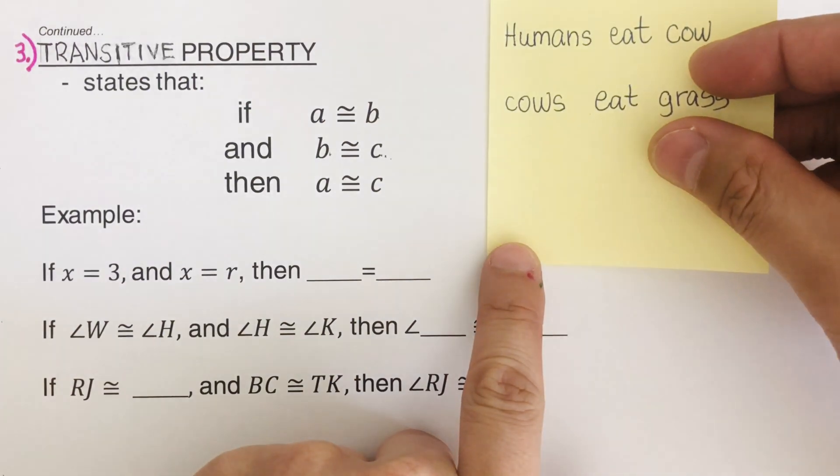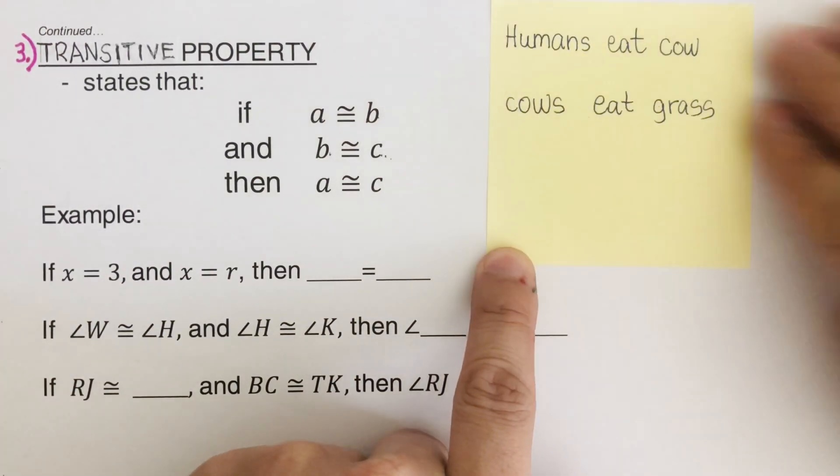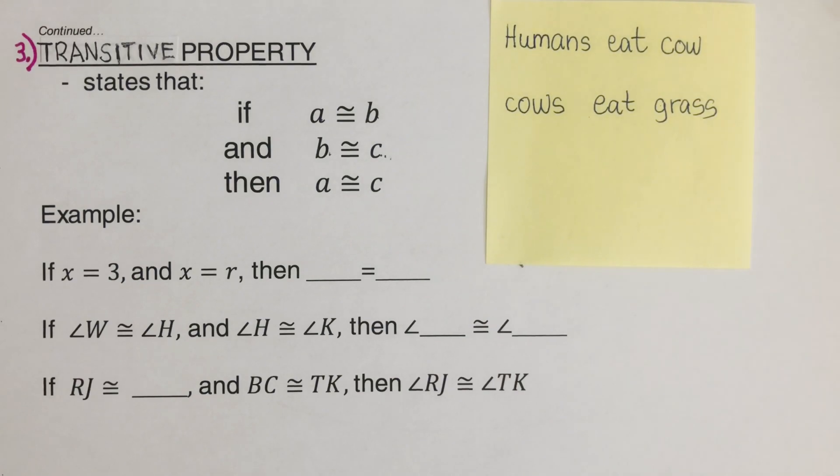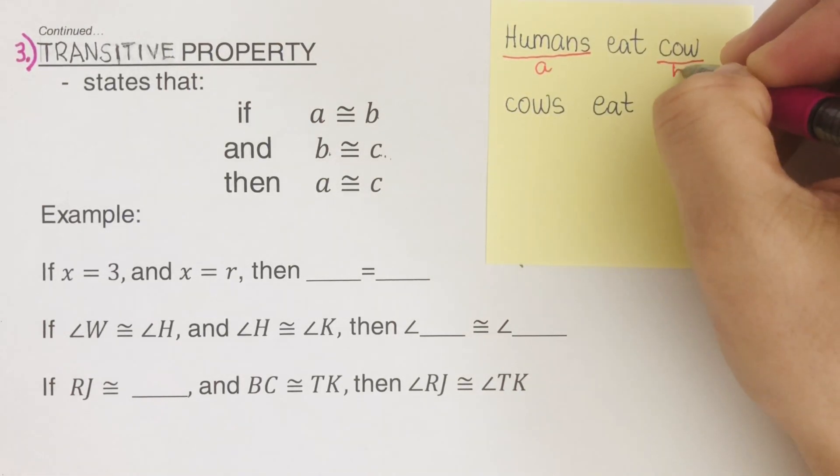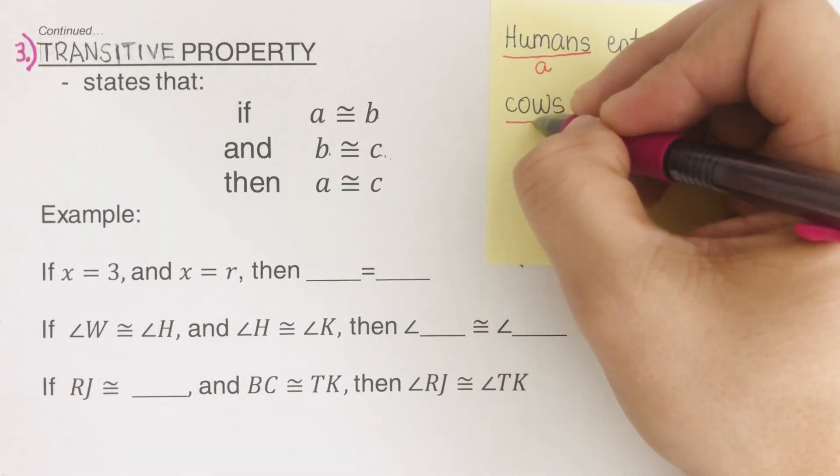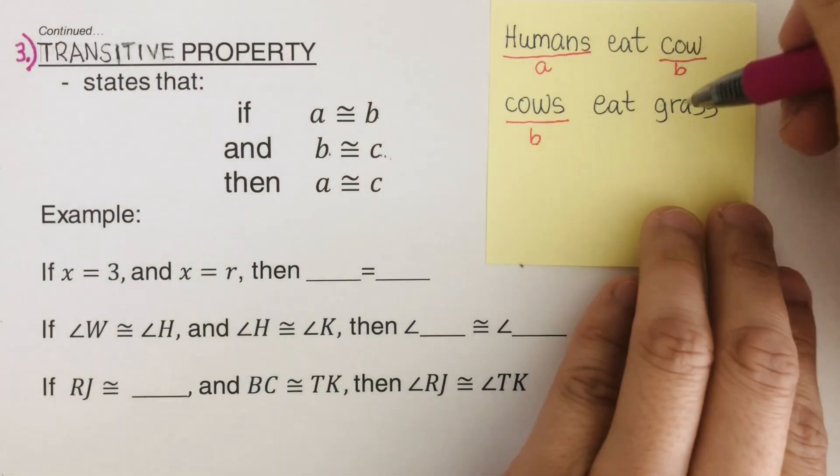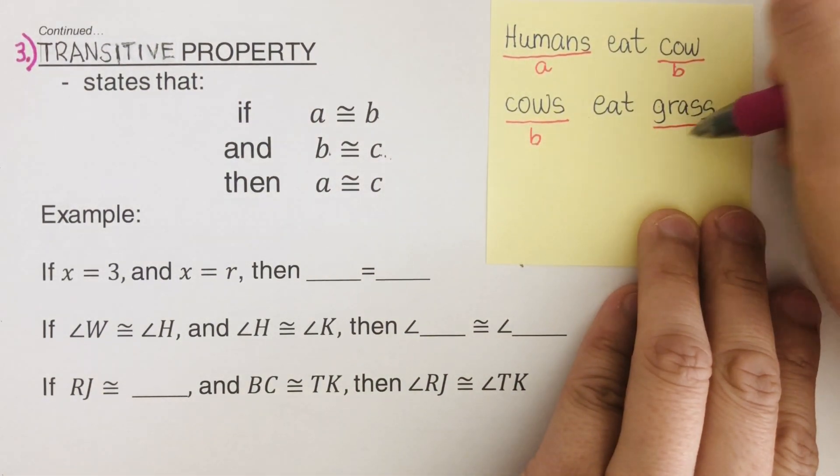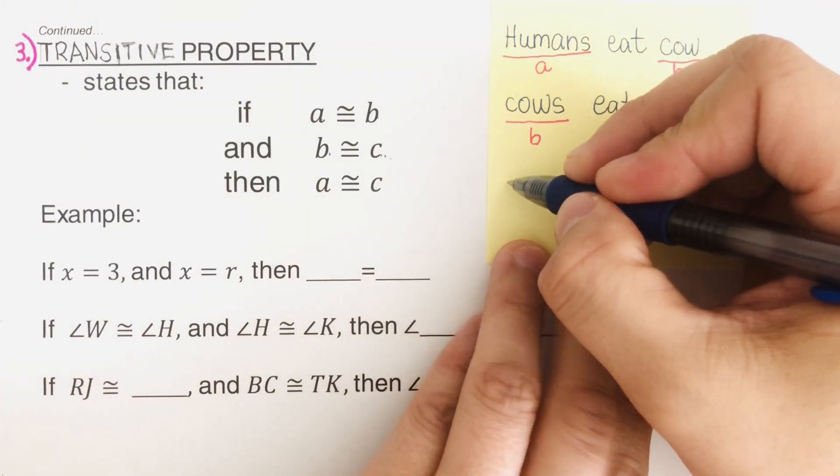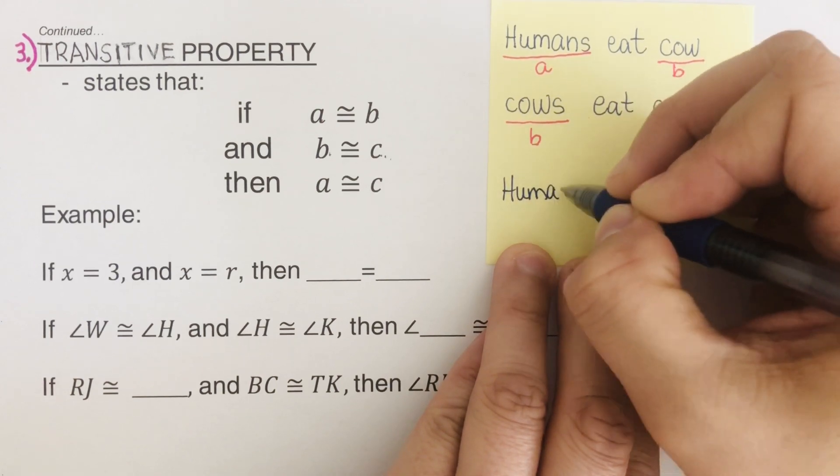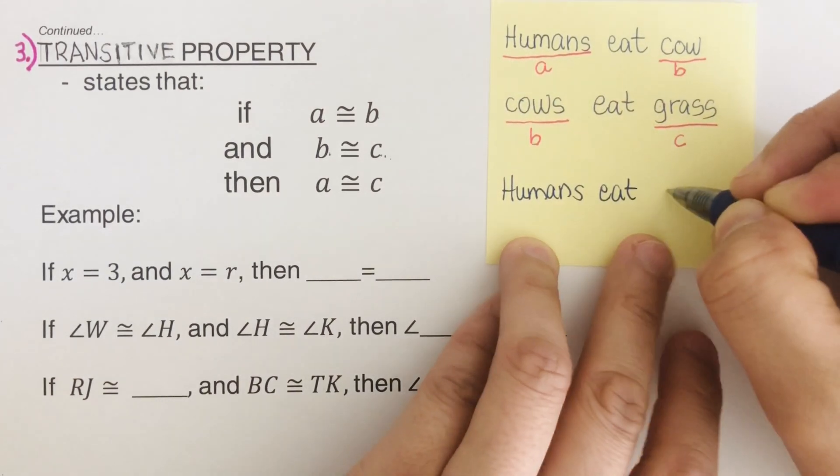Let's take, for example, this one right here. So we have humans eat cow. Cows eat grass. What can we conclude then? So let's take this as our A. So humans would be A. And this would be our B. So the cow is B. So that means cow right here would be our B. And the grass is C. So what can we conclude then? We can therefore say that humans eat grass.